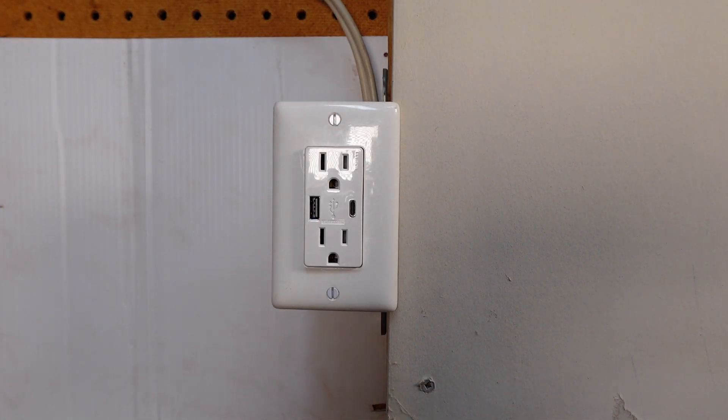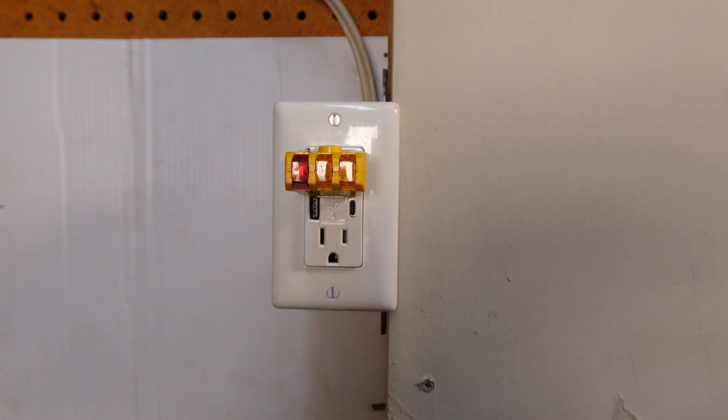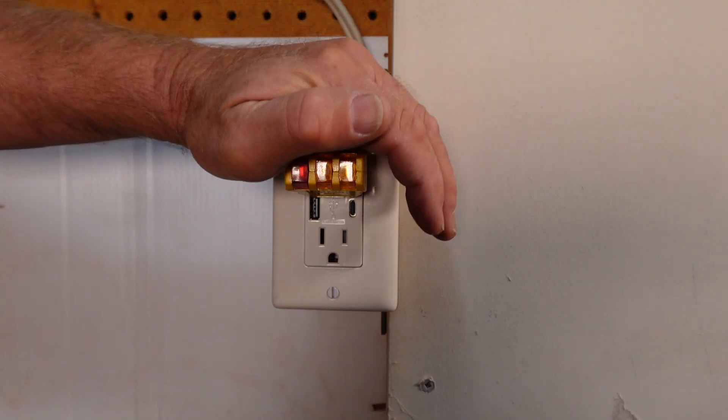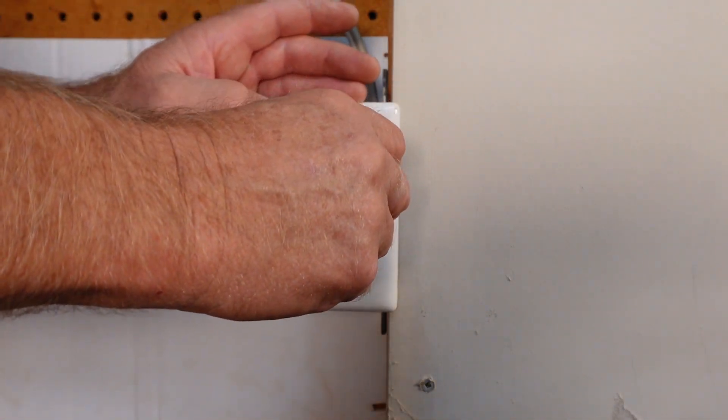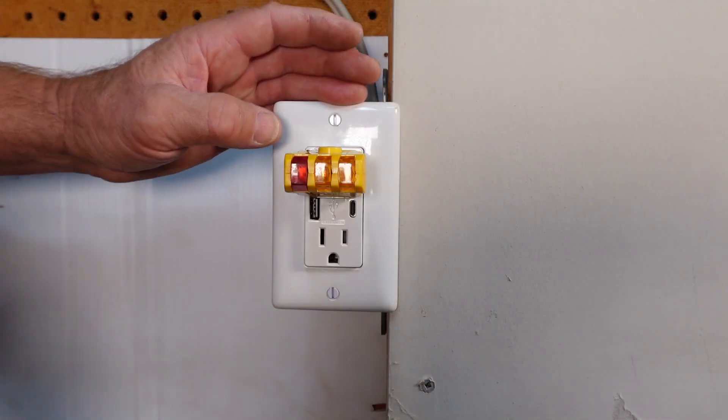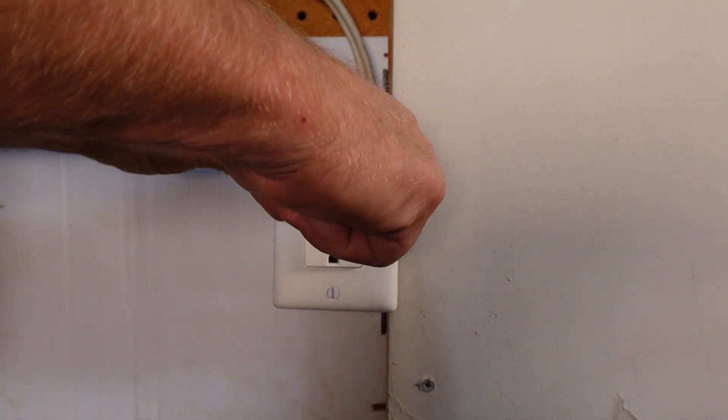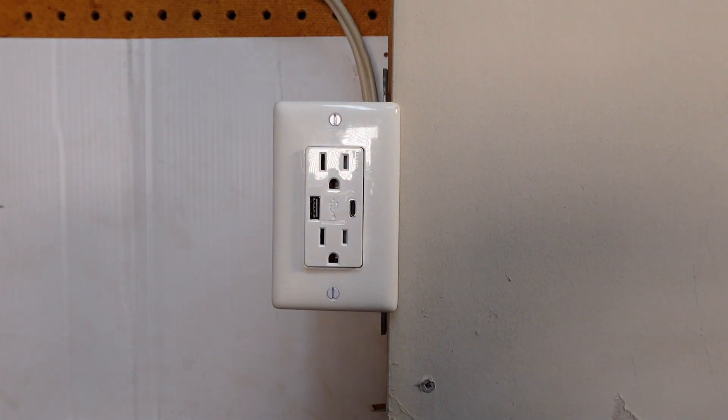All right plug in my plug tester, go to the panel, turn it on. I got two yellow lights so telling me it's wired correctly. It's hard to see that with the studio lighting here but trust me it's on. Now we can plug in a couple of devices and just make sure they charge and we are done.